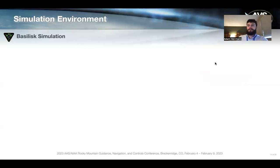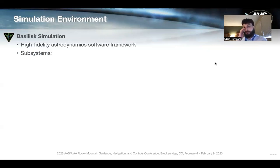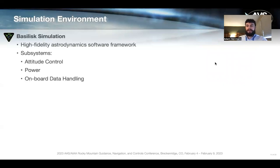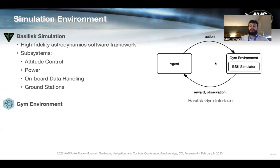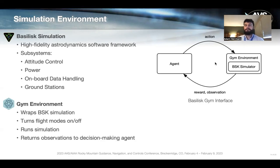The simulation environment uses Basilisk from the AVS Lab — a high-fidelity astrodynamic software framework. We model subsystems including attitude control, power, onboard data handling, and ground stations, all interacting with one another. Reaction wheels consume power; power generation depends on incidence angle with the sun, which depends on pointing direction. It's a very complex but realistic simulation. We wrap it in a gym environment where the agent passes an action to gym, which turns different models on or off in Basilisk and returns rewards and observations back to the agent.